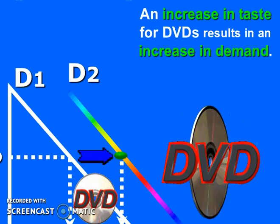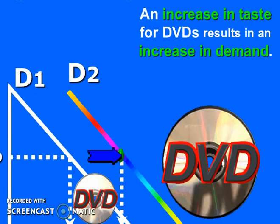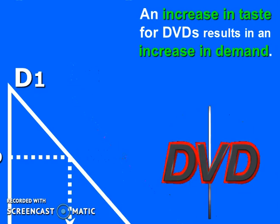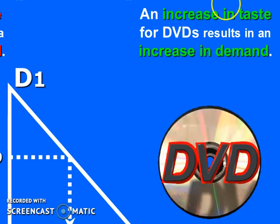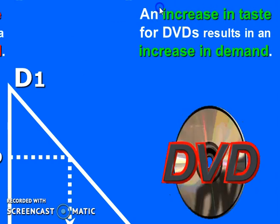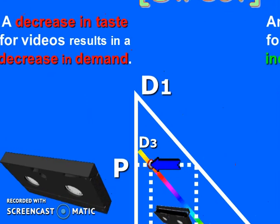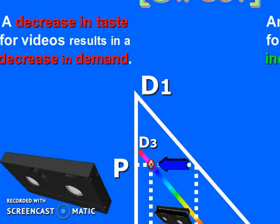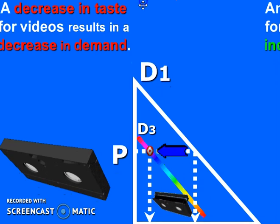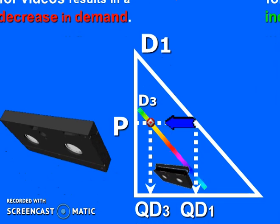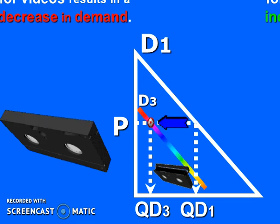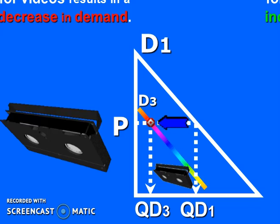At this point, price remains the same — there is no change in price. A decrease in taste for videos results in a decrease in demand, and the demand curve shifts backward. The quantity decreases from QD1 to QD3, and the whole curve shifts backward, but still price remains the same.